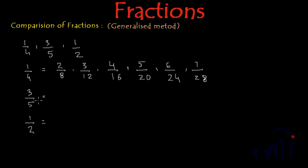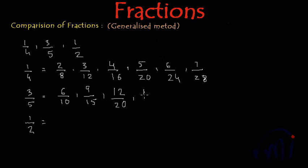Now let's repeat the same procedure with the second fraction. For 3/5: multiplying by 2 gives 6/10; by 3 gives 9/15; by 4 gives 12/20; by 5 gives 15/25; by 6 gives 18/30. We've written up to 28 for the first fraction and up to 30 for the second because we didn't get 28 in between. But one good thing is that 3/5 has an equivalent fraction with denominator 20 — that is 12/20 — and so does 1/4, which gives 5/20.